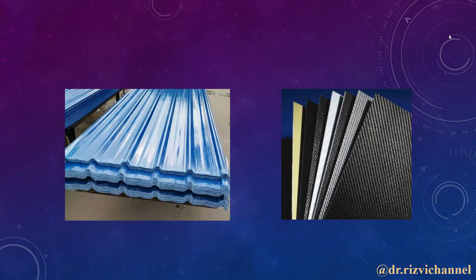Moving on to the examples of composites — you have seen the laminated sheets that are now used as a replacement for steels, tin sheets, and laminates. Reinforced plastics are replacing other engineering materials and forming an alternative for those materials.